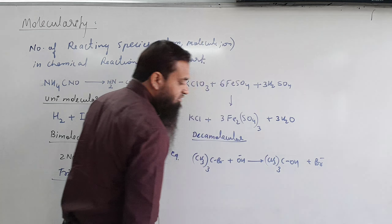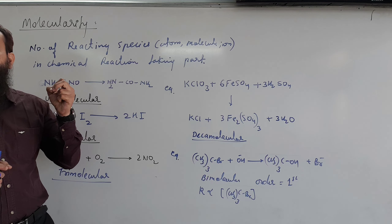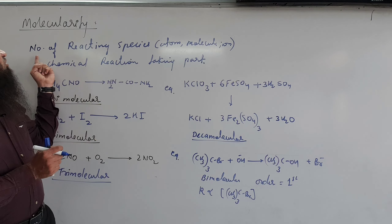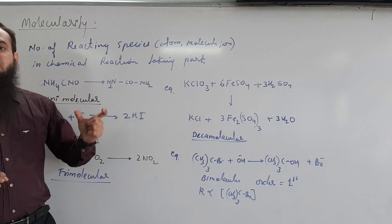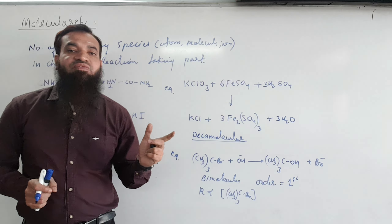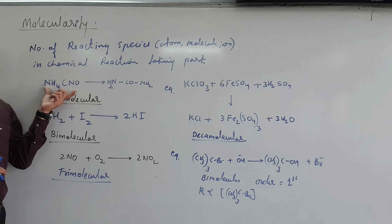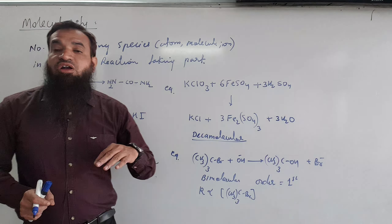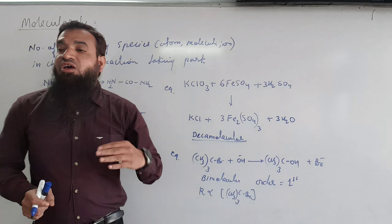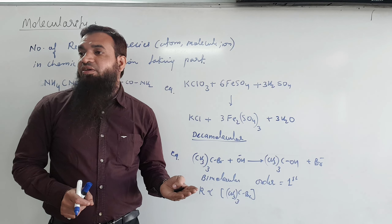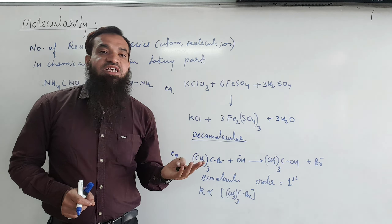We have to look at the mechanism of the reaction, its steps — which step the rate depends on — and accordingly we get the order of reaction. The molecules participating in the reaction do not necessarily determine the order. Molecularity is the number of reacting species — atoms, ions, molecules — involved in a chemical reaction. Order of reaction depends on the rate-determining step, and the sum of the powers of concentration terms in that step gives the order of reaction.